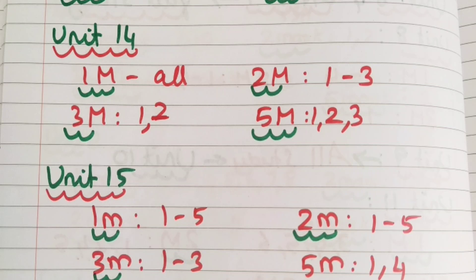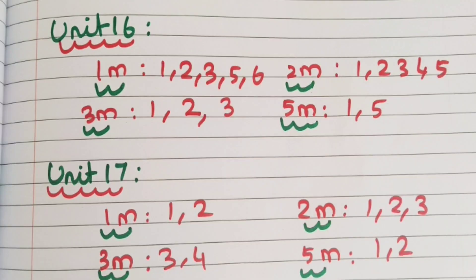Unit 16: 1 mark question — 1, 2, 3, 5, 6. 2 mark question — 1, 2, 3, 4, 5. 3 mark question — 1, 2, 3. 5 mark question — 1 and 5.